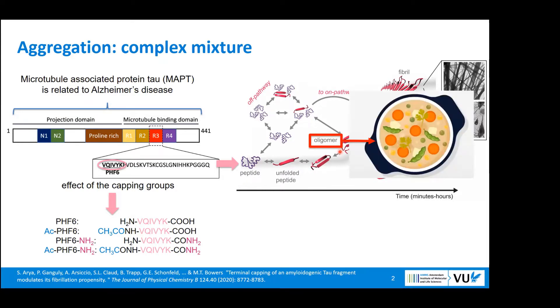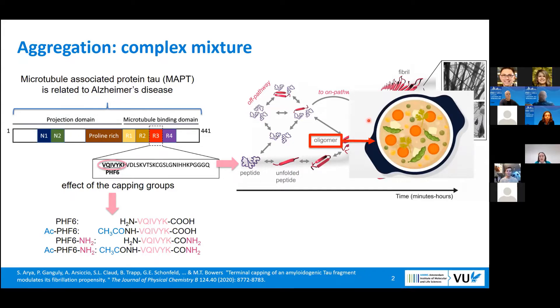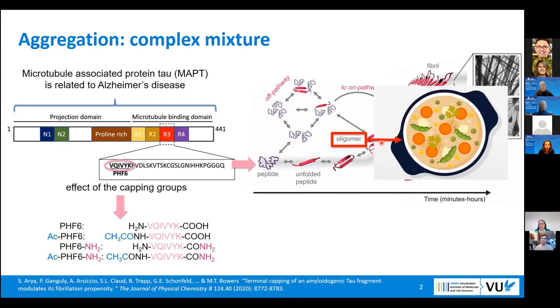Oligomers are essentially a mix of different molecules that have different sizes, starting from monomer and going up to tetramer and so on, and they have different shapes. In order to study them, we need a tool.